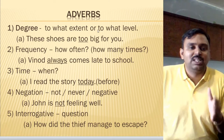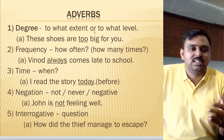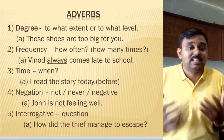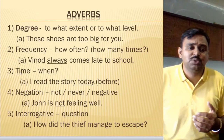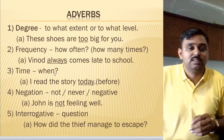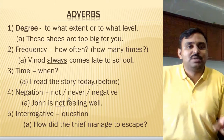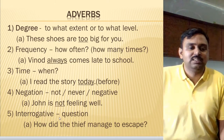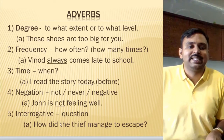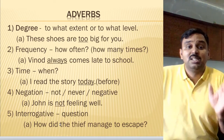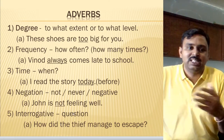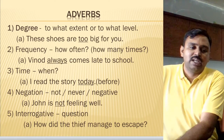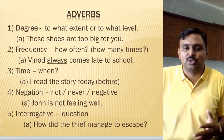Just to revise in short: degree tells you how much level or to what extent the action happened; frequency tells you how many times or how often; time tells you when an action happened; negation tells you about 'not' or 'never'; and interrogative tells you it's a question. These are short techniques to identify a particular adverb. Practice well, then go for examples.